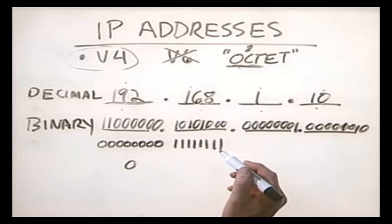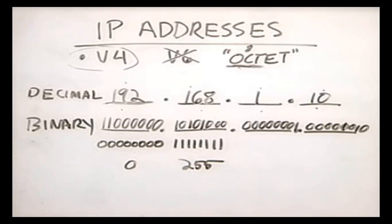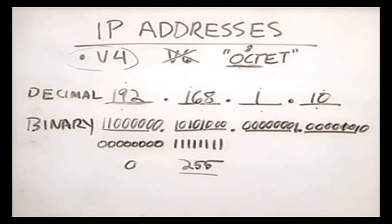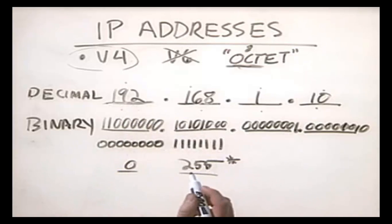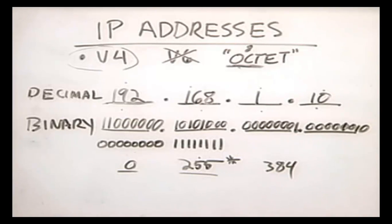If we were to convert those 8 ones into a decimal number, it would be 255. Therefore, no decimal number in an IP address can be any higher than 255. The lowest it can be is 0. If you ever watch shows about computers and hackers, many times you'll see them use IP addresses with numbers greater than 255. I watched one recently that had 384 as one of the octets, and I just started laughing — it's impossible. You cannot get the decimal number 384 using 8 binary digits. The highest you can get is 255.